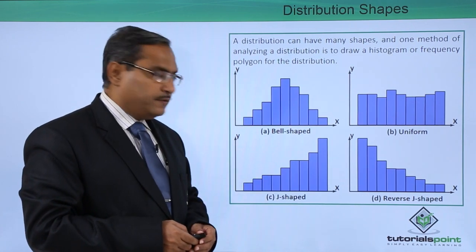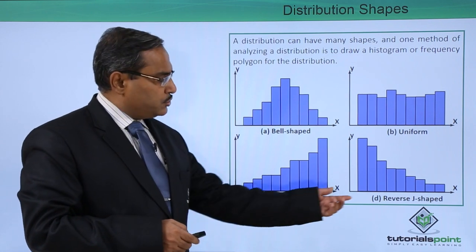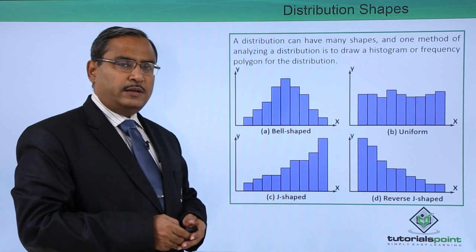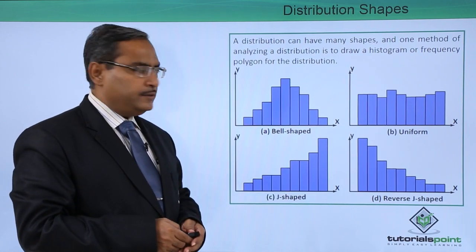And this is known as the reverse J-shaped. Here most of the frequencies are falling in the lower class limits, lower class intervals.